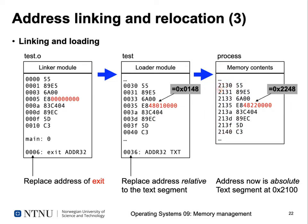If the process is loaded at, say, hexadecimal 0x2100, the OS must change the address at 0x2136 to wherever libc's exit function now resides in memory. The text segment starting at 0x2100 means all addresses shift by that amount. This load-time relocation is done as part of the exec system call, and the typical Unix component responsible for this is ld.so, the dynamic linker.